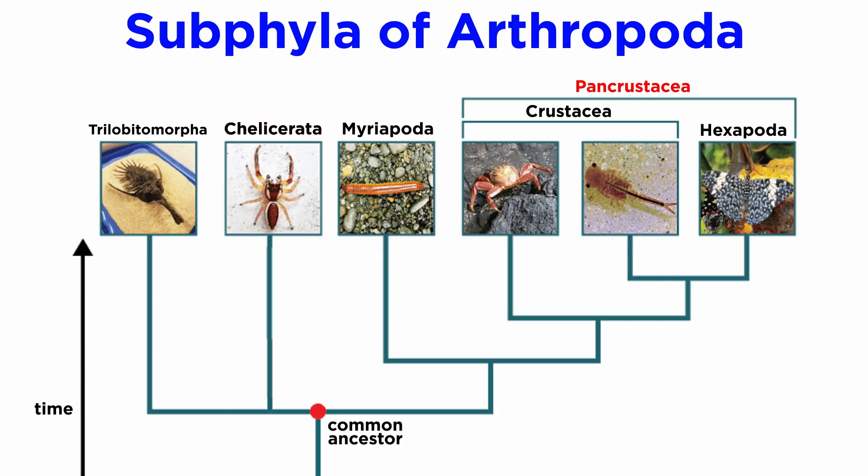In this tutorial, we will be covering all marine forms of Pancrustacea — that is, the paraphyletic clade known as Crustacea, often considered one of the five subphyla of Arthropoda, though this classification is now dated.